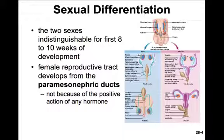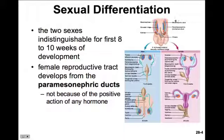Remember sexual differentiation from the last chapter. The two sexes are indistinguishable for the first eight to ten weeks of development. The female reproductive tract is going to develop from the paramesonephric ducts. Recall there were originally two sets of ducts: the mesonephric ducts, or Wolffian ducts, and the paramesonephric ducts. The paramesonephric ducts will develop because there is no testosterone present — not because of any positive action of a hormone itself.